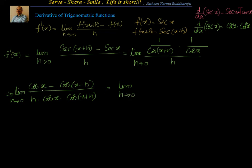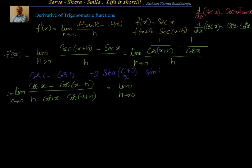Limit as h tends to 0. We use the formula: cos C minus cos D is equal to minus 2 sin of (C plus D)/2 into sin of (C minus D)/2. That is the formula we have. So let us try to substitute in that formula.